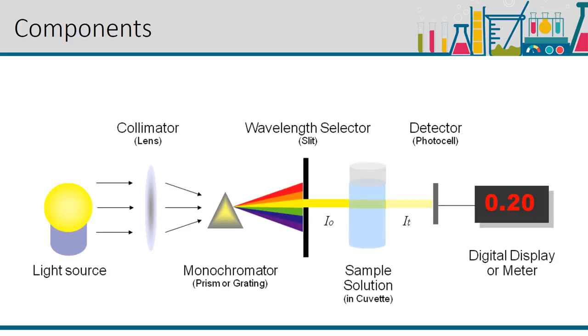In a colorimeter, a beam of light with a specific wavelength is passed through a solution via a series of lenses, which navigate the colored light to the measuring device. This analyzes the color compared to an existing standard. A microprocessor then calculates the absorbance or percent transmittance.